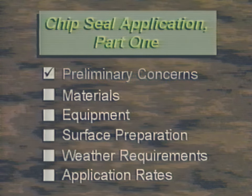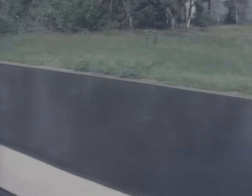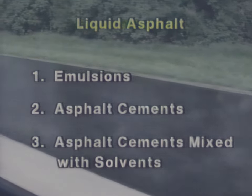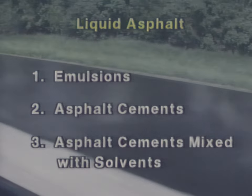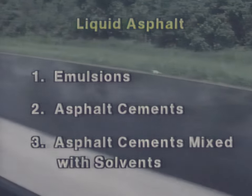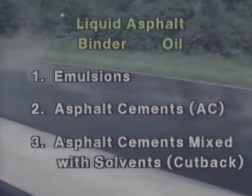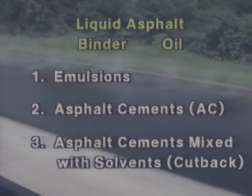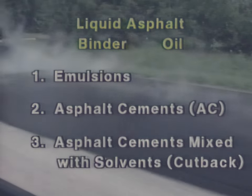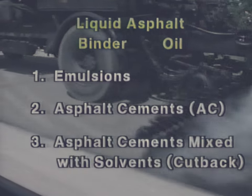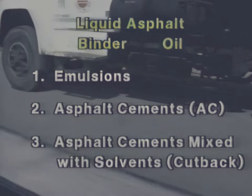The next step is to check the materials. There are three broad categories of liquid asphalt: emulsions, asphalt cements, and asphalt cements mixed with solvents. Asphalt cements are commonly referred to as ACs, and asphalt cements mixed with solvents are called cutbacks, but all three are typically referred to as binder, or simply, oil.